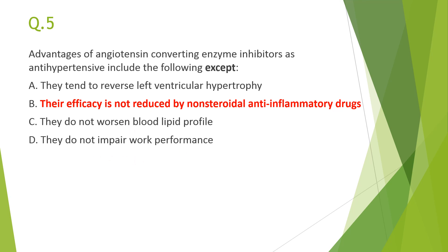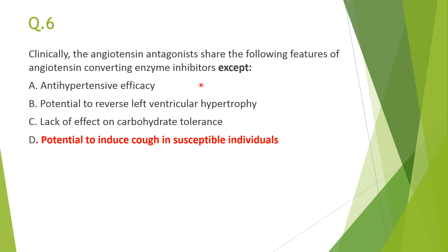ACE inhibitors can reverse left ventricular hypertrophy and pathological remodeling, do not worsen the lipid profile, and do not impair work performance. The next question: angiotensin receptor antagonists (AT1 receptor antagonists) share all the features of ACE inhibitors except D — potential to induce cough — because they do not inhibit the ACE enzyme; they inhibit the AT1 receptor on which angiotensin 2 acts, so they do not cause cough and angioedema.